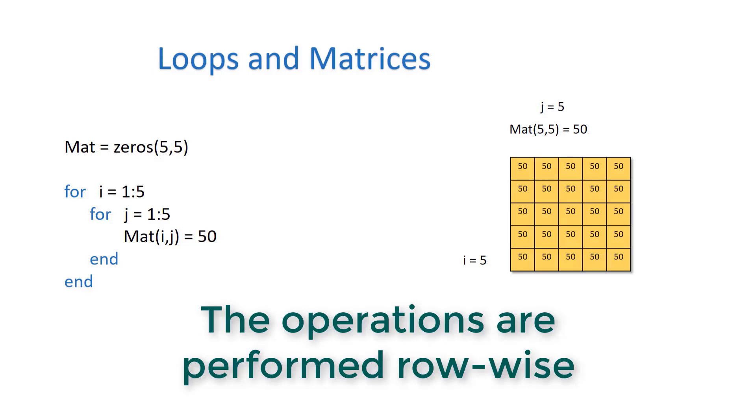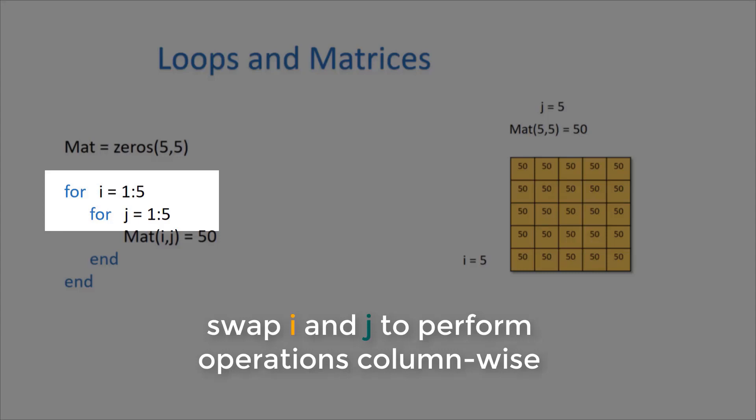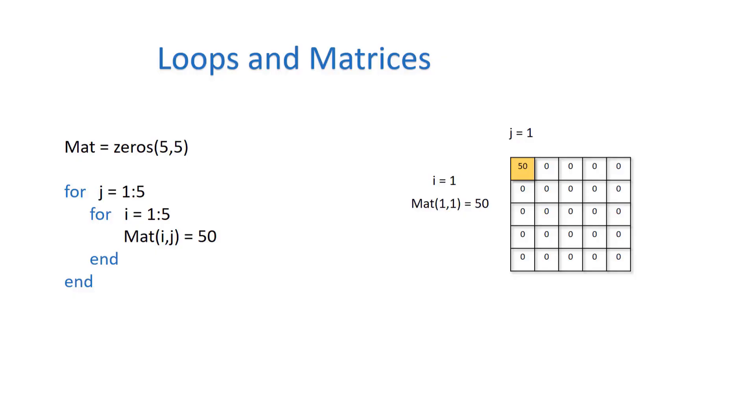This is the final result once this code finishes executing, and all operations are performed row-wise. Now if I swap i and j, using j first rather than i, you would see that these operations happen column-wise. That's because you're fixing j and then varying the value of i, so i equals 2, then i equals 3, then i equals 4, and i equals 5.